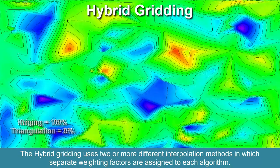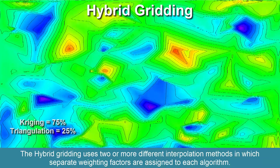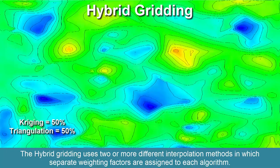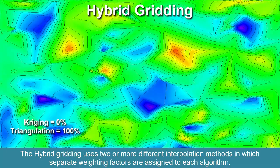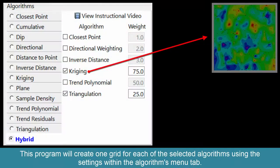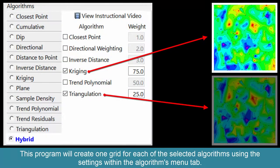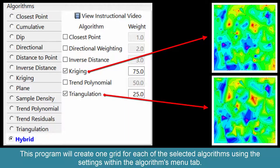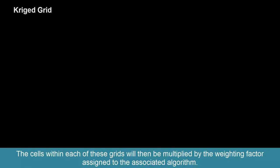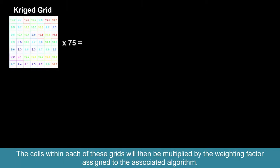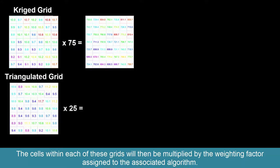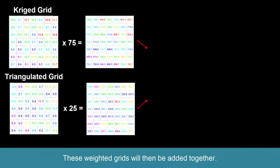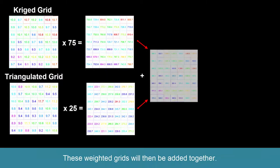The hybrid gridding uses two or more different interpolation methods in which separate weighting factors are assigned to each algorithm. This program will create one grid for each of the selected algorithms using the settings within the Algorithms menu tab. The cells within each of these grids will then be multiplied by the weighting factor assigned to the associated algorithm. These weighted grids will then be added together.